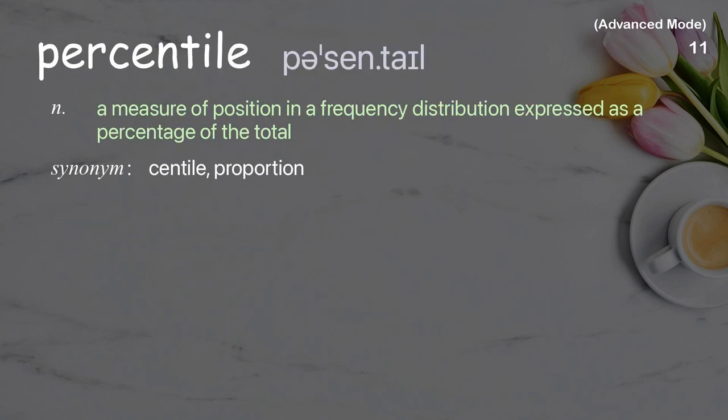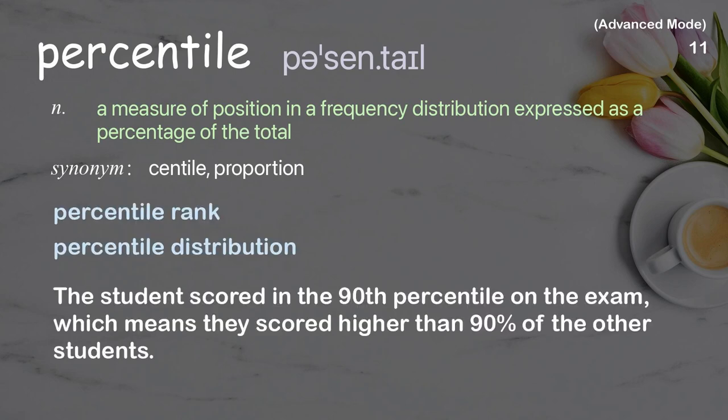Percentile. A measure of position in a frequency distribution expressed as a percentage of the total. Examples: percentile rank, percentile distribution. The student scored in the 90th percentile on the exam, which means they scored higher than 90% of the other students.